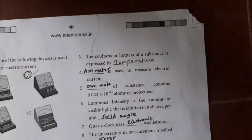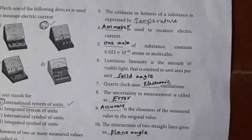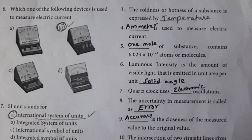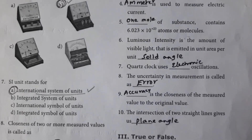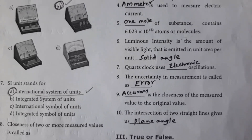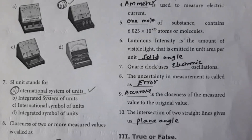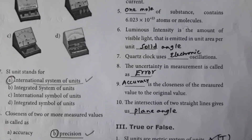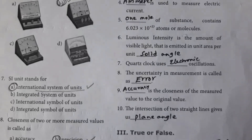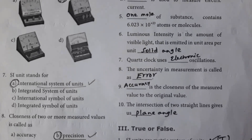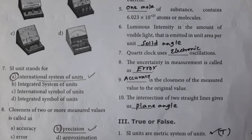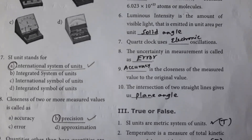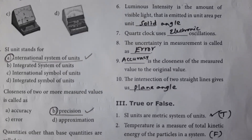Dash is used to measure electric current — Ammeter. One mole of substance contains 6.023 × 10²³ atoms or molecules. The amount of visible light emitted in unit area per unit dash — solid angle.